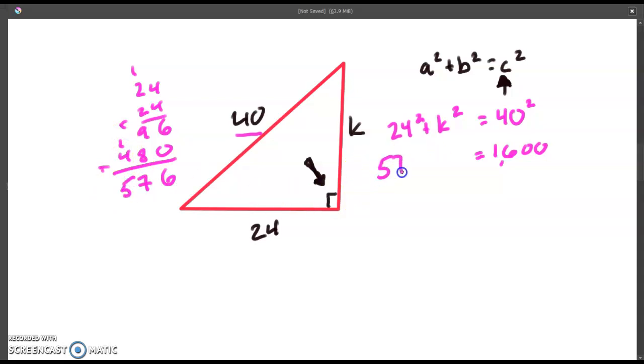So we end up with the formula 576 plus k squared is equal to 1,600. Now, we need to, once again, solve for this k. That's what we're looking for.